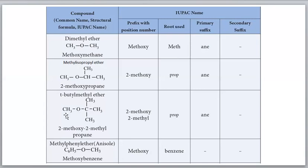For the next compound: methyl is the smaller group, so methoxy. Numbering the propane chain: there is a methyl branch at position 2, and the methoxy is also at position 2. So the IUPAC name is 2-methoxy-2-methylpropane.